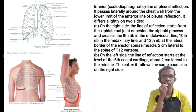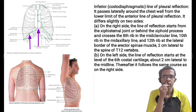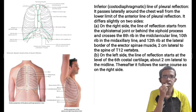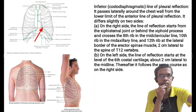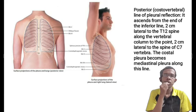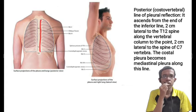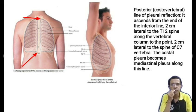The inferior or costodiaphragmatic line of pleural reflection: on the right side, the line starts from the xiphisternal joint, crosses the 8th rib in the midclavicular line, the 10th rib in the midaxillary line, and the 12th rib at the lateral border of the erector spinae muscle, 2 cm lateral to the spine of T12 vertebra. On the left side, the line starts at the level of the 6th costal cartilage about 2 cm lateral to the midline, and thereafter follows the same course as on the right side. The posterior or costovertebral line of pleural reflection ascends from the end of the inferior line 2 cm lateral to the T12 spine along the vertebral column to 0.2 cm lateral to the spine of C7. The costal pleura becomes mediastinal pleura along this line.